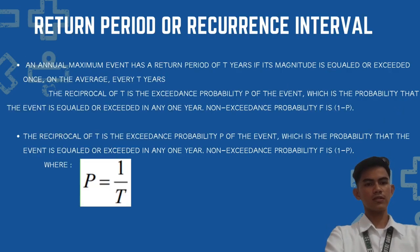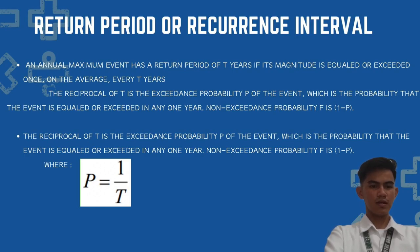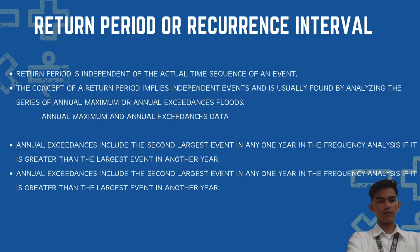The return period or recurrence interval: an annual maximum event has a return period of T years if its magnitude is equaled or exceeded once on average every T years. The exceedance probability P equals 1/T. Return period is independent of the actual time sequence of an event, and it implies independent events usually found by analyzing series of annual maximum or annual exceedance floods.